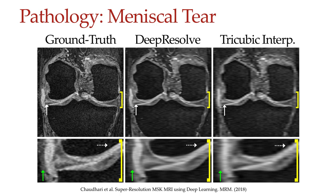An additional question we asked is how subtle pathology is represented by the network. Here is an example of a potential meniscus tear visible in a coronal reformation. In a zoomed-in inset, we can see a region of increased signal intensity touching the articular surface. For the ground truth and Deep Resolve images, the morphological image quality looks quite similar — you can evaluate the high signal as it touches the cartilage. However, for the tricubic interpolated images everything is diffusely blurred out, making it challenging to delineate where the meniscal tear ends and where inflammation begins — which would be quite challenging from a diagnostic perspective. Overall, even for pathology, the Deep Resolve network works quite well.